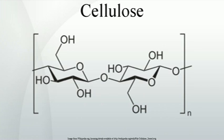Hermann Staudinger determined the polymer structure of cellulose in 1920. The compound was first chemically synthesized, without the use of any biologically derived enzymes, in 1992 by Kobayashi and Shoda.